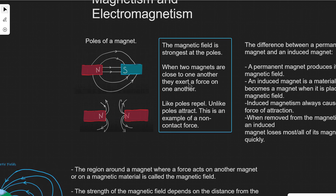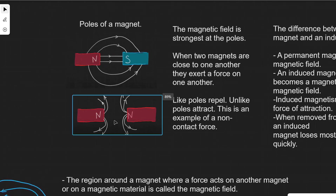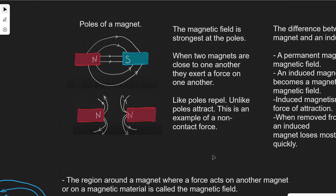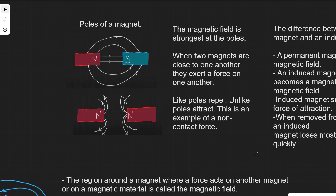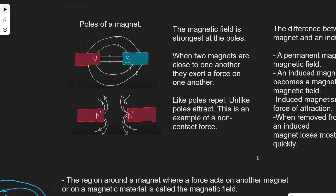When two magnets are close to one another they're going to exert a force. If they're like poles they will repel — here we have two north poles that are going to repel. If we have two unlike poles, for instance a north pole and a south pole, then they're going to attract. This magnetic force is an example of a non-contact force.